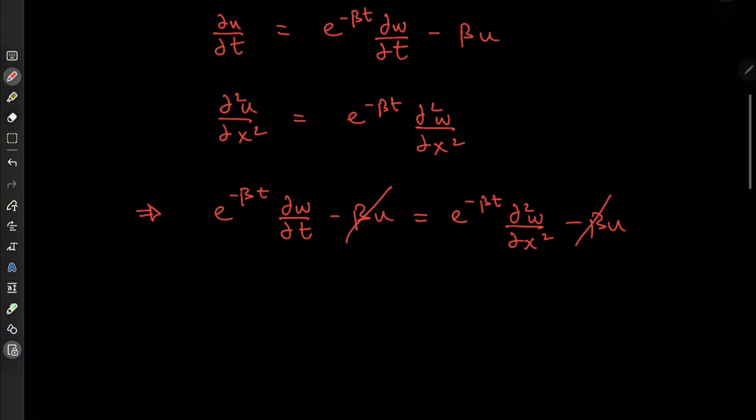And of course there would be cancellation of e to the minus beta t, that term is non-zero, so expand using its inverse. And you have partial w, terribly sorry about that, over partial t, equal to partial squared w over partial x squared,